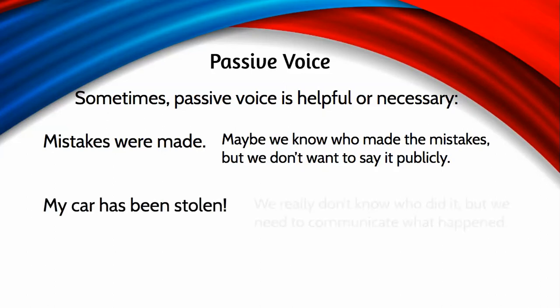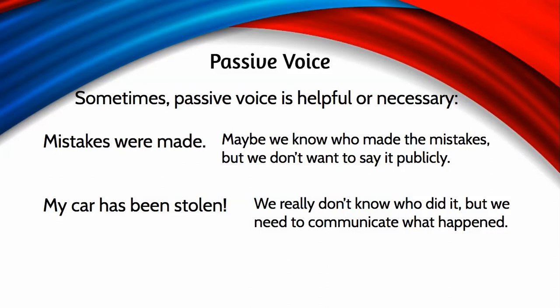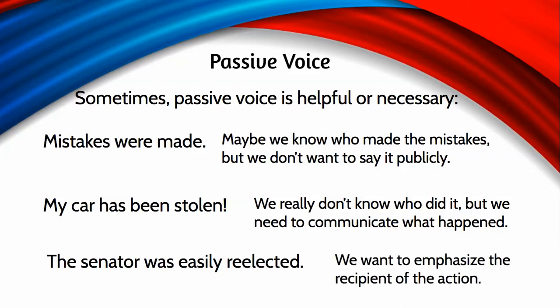'My car has been stolen' — here we probably don't know who did the stealing, but we need to communicate that it happened, so we need some kind of subject. Another example: 'The senator was easily re-elected.' Here we want to emphasize the senator — the recipient — rather than the people doing the electing. If you wanted to emphasize the people, you could say 'The people easily re-elected the senator,' but if you're trying to emphasize the recipient, passive voice is appropriate.